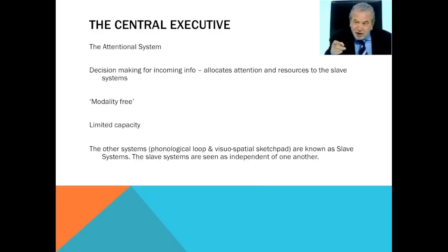The central executive has a limited capacity — as an attentional system, it's limited to what you're paying attention to at any one time. The other systems are known as the slave systems. I like to use the analogy of The Apprentice: Lord Sugar is the central executive, sending out tasks and allocating attention. His aides — Karen Brady or Claude Littner — are the slave systems. Importantly, the slave systems are independent of each other.